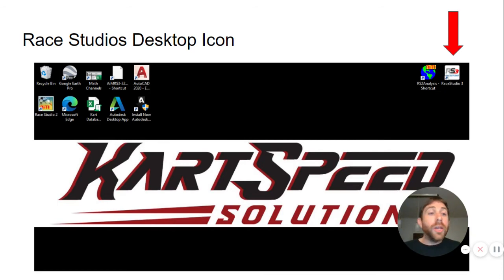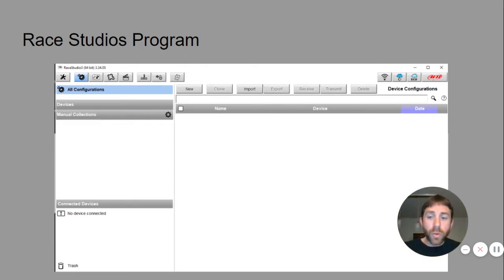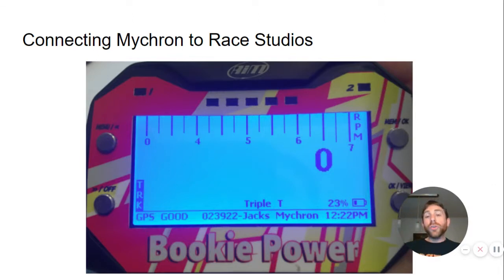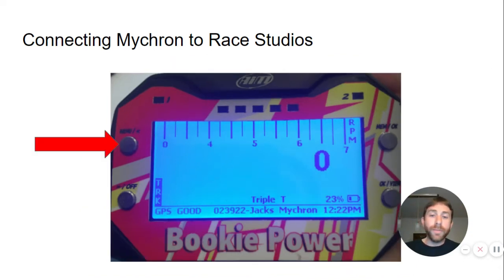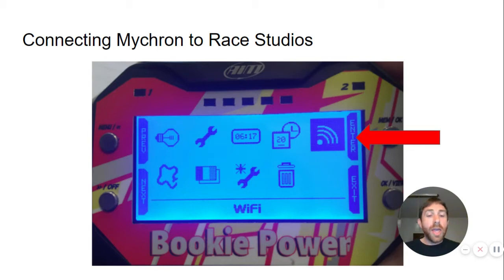Next, what you need to do is double click the RayStudio 3 icon. When you double click it, this is going to open up and this is going to be your home screen. Once you get to this point you need to grab your Micron and turn it on. Once your Micron gets to its home screen you need to hit the menu button in the upper left hand corner of your Micron. Once you hit that button and access the menu of the Micron, you need to go over to the Wi-Fi icon and push enter.